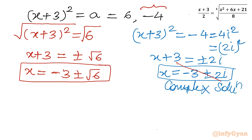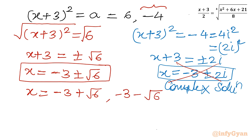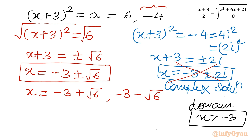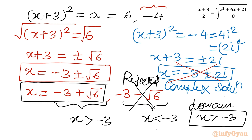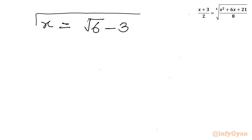Now we check both solutions against the domain x greater than minus 3. The first solution is minus 3 plus root 6. Since root 6 is approximately 2.449, this is greater than minus 3 — it is accepted. The second solution is minus 3 minus root 6, which is less than minus 3 — it violates the domain and is rejected. So our ultimate solution is x equals minus 3 plus root 6, or equivalently root 6 minus 3.